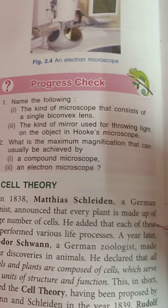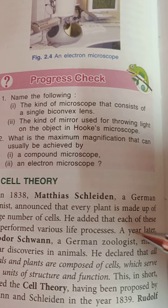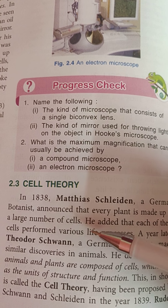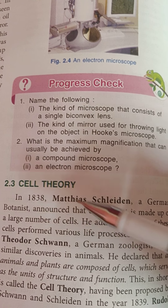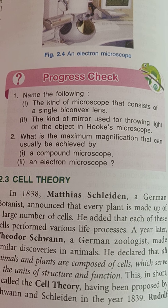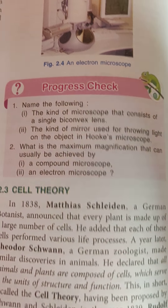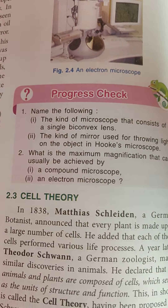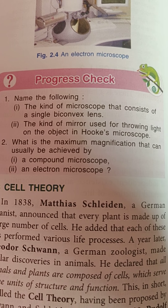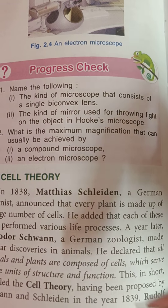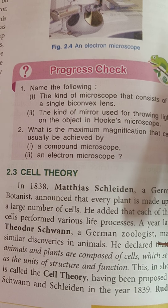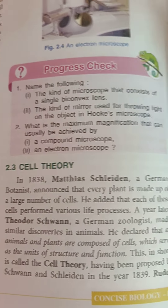In 1838, Matthias Schleiden, a German botanist, announced one part of the cell theory: that every plant is made up of a large number of cells. He also added that each of the cells performs various life processes — they are made up of cells, and all life processes like respiration and excretion are performed by the cells.